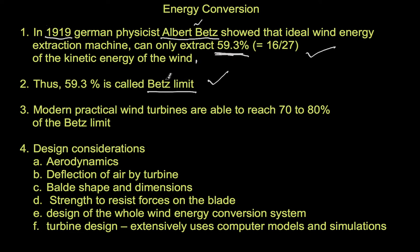The Betz limit applies to an ideal wind energy extraction machine. For practical machines, modern wind turbines are able to reach 70 to 80 percent of the Betz limit. These considerations all come into picture when you're actually sitting down to design a wind energy system.